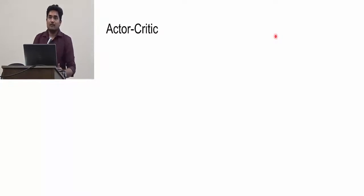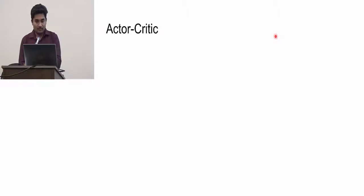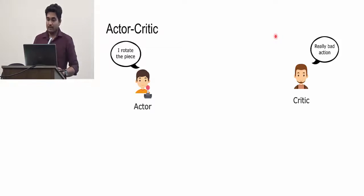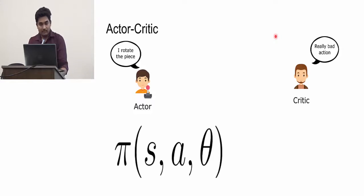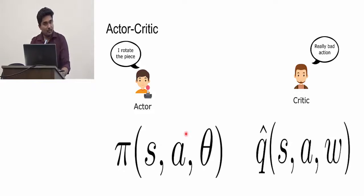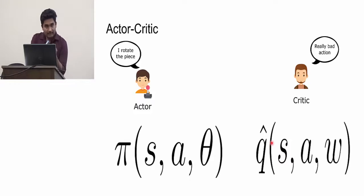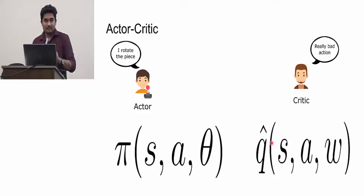Actor-critic is like a real life scenario. Imagine you are playing FIFA with a friend. You take a shot, your friend judges you. You are the actor and your friend is the critic. They use two networks: one for the actor (which gives the policy value) and one for the critic (which evaluates what value to expect if you take a given action). Both the actor and critic networks receive the current state ST from the environment.